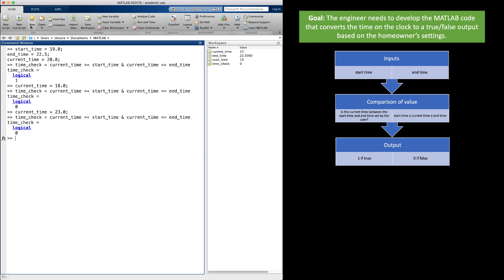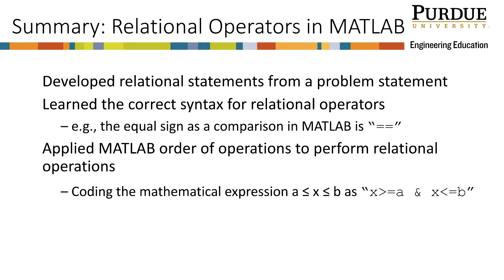Note that this example was coded in the MATLAB command window. To be reusable, it would be much better in a script or user-defined function — that translation is left for you to do. In summary, through this module we developed relational statements from a problem statement, learned the correct syntax for relational operators (for example, the equality comparison in MATLAB uses two equal signs), and applied MATLAB order of operations. In particular, to code a ≤ x ≤ b in MATLAB, we must use: x >= a & x <= b.